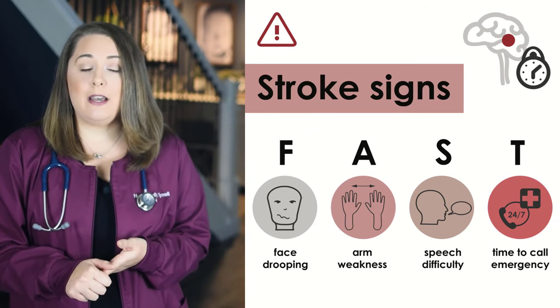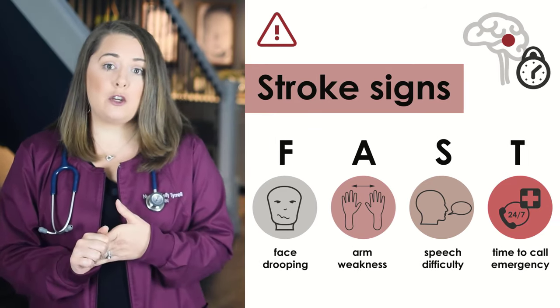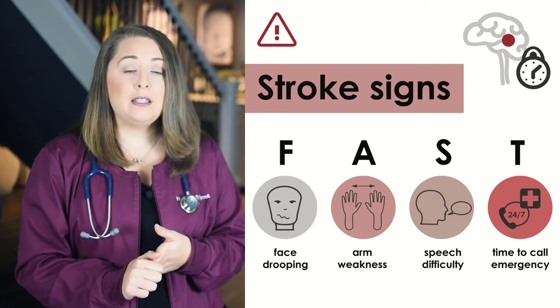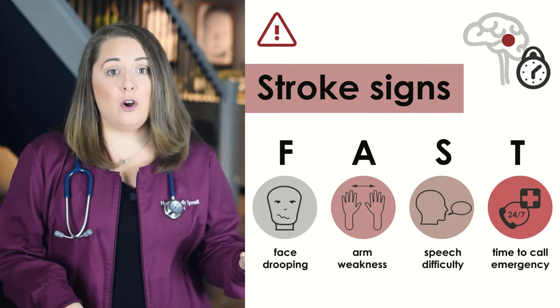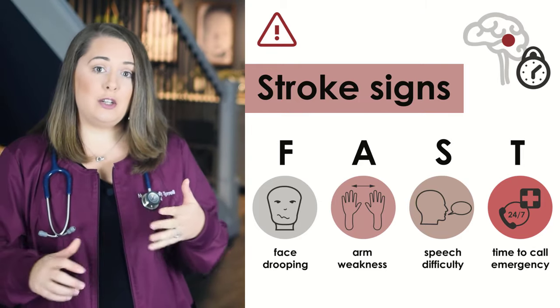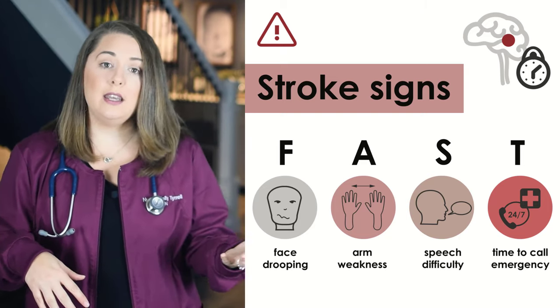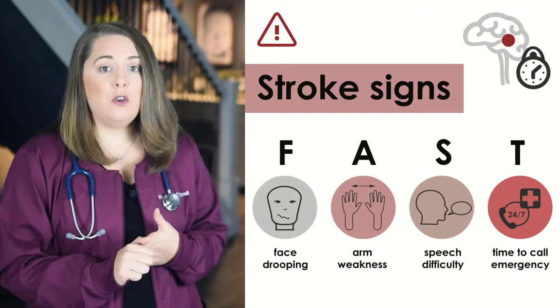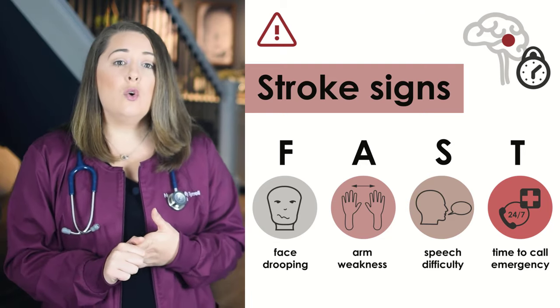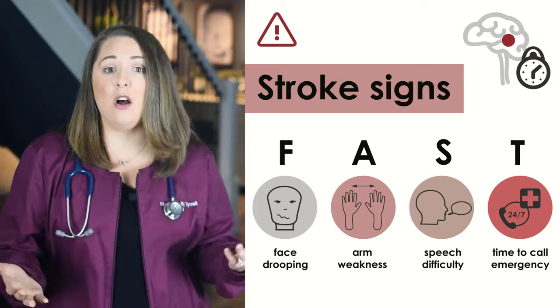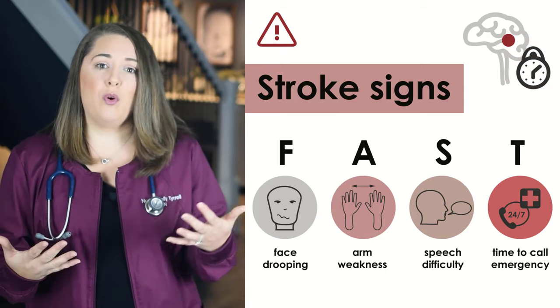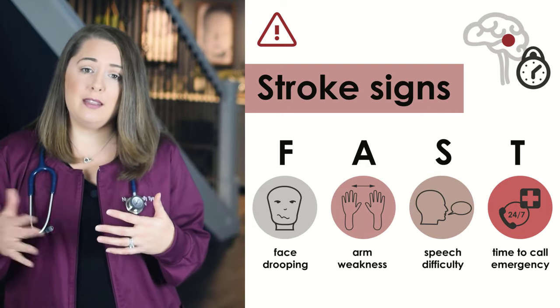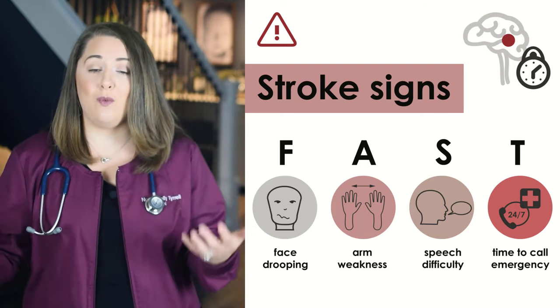Now let's talk about hallmark signs and symptoms seen with both types of strokes. You'll want to be familiar with the acronym FAST. F stands for facial drooping — asymmetrical paralysis on one side of the face only. A is for arm weakness, again asymmetrical, affecting just one side. S stands for speech difficulty — look for muffled or slurred speech, or aphasia, which means the patient can't speak at all, or when they do it sounds like jumbled words. In the patient's mind they know exactly what they're saying, it just doesn't come out that way.